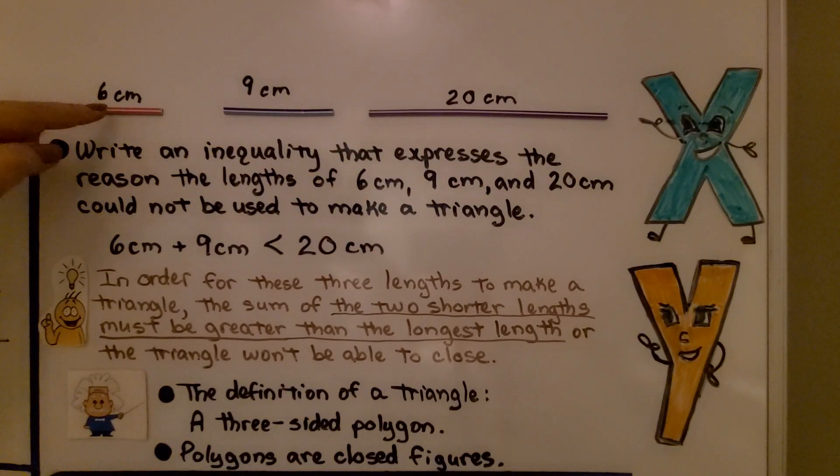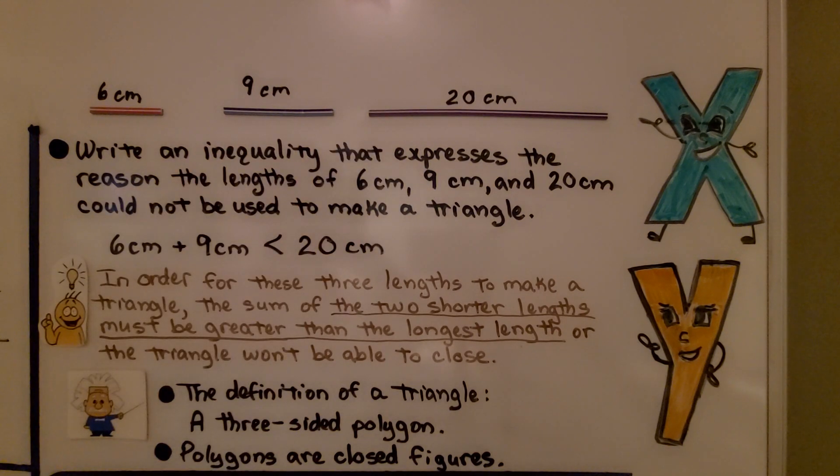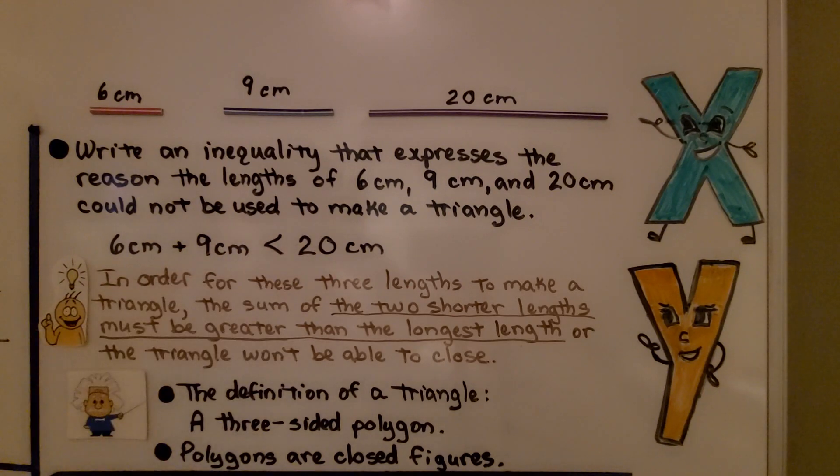Here we have a 6 cm magnet stick, a 9 cm, and a 20 cm. It's telling us to write an inequality that expresses the reason the lengths of 6 cm, 9 cm, and 20 cm cannot be used to make a triangle. We can write 6 cm plus 9 cm is less than 20 cm.